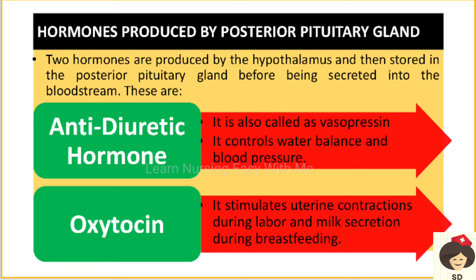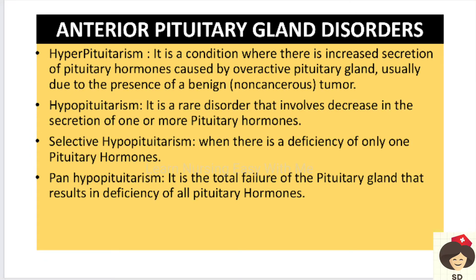Coming to the posterior pituitary gland, it secretes two hormones: antidiuretic hormone and oxytocin. Antidiuretic hormone, also called vasopressin, is responsible for maintaining water-fluid balance and blood pressure. Oxytocin helps in uterine contraction during labor and also helps in secretion of milk by the mother after delivery.